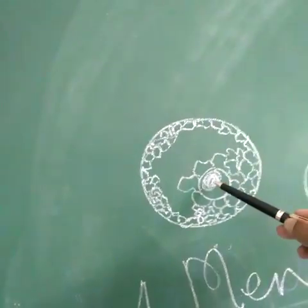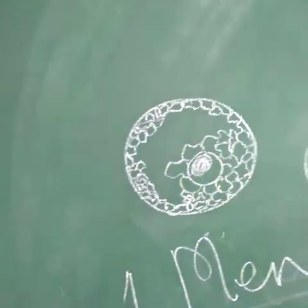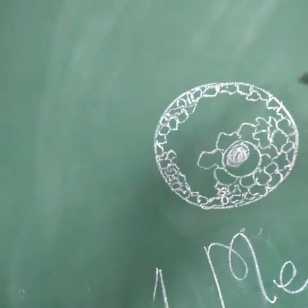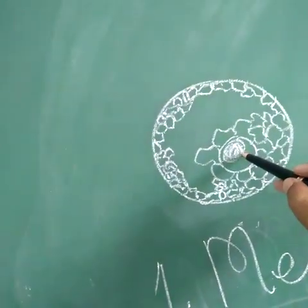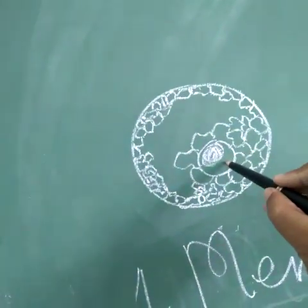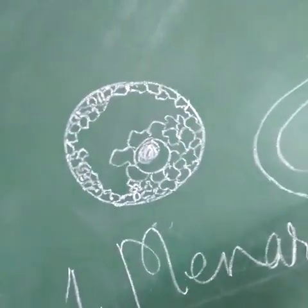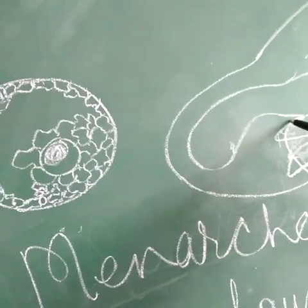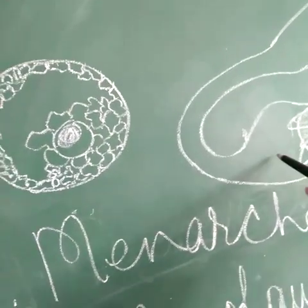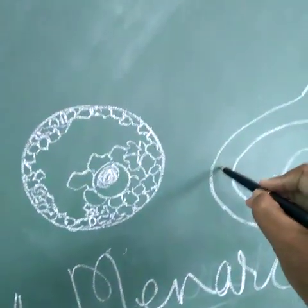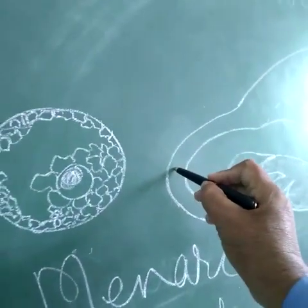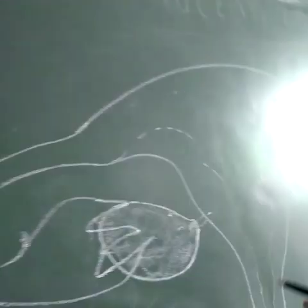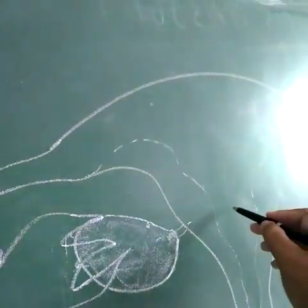This is the matured Graafian follicle, and when this matured Graafian follicle ruptures, the ovum lying inside comes out. When it comes out of the ovary, it is received by the fimbriae-like structure and reaches the ampullary region of the fallopian tube.